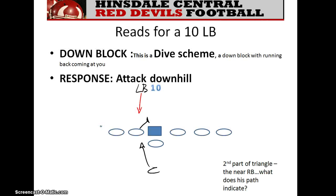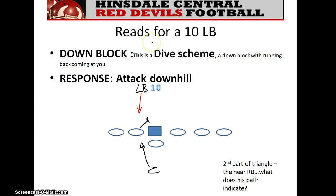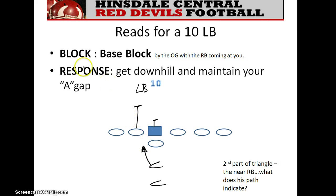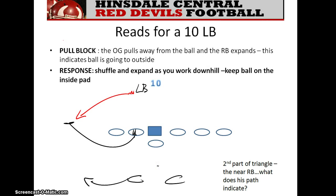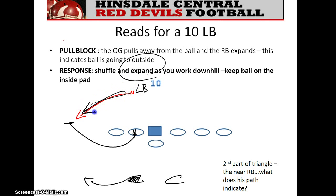Let's look quickly at the 10 linebacker reads. If you're a 10 linebacker and you get a down block with the back coming towards you, that's downhill — first, second, and third parts of your triangle all indicate get downhill. Here's a base block with him coming out to block you and the back coming towards you — again, you get downhill and maintain your A gap. Your second part of the triangle is coming at you. Now you see a pull, and as you see the pull with your second read expanding, you expand also — meaning you go laterally, working downhill to try to contain the ball, which is fast flow to the outside.